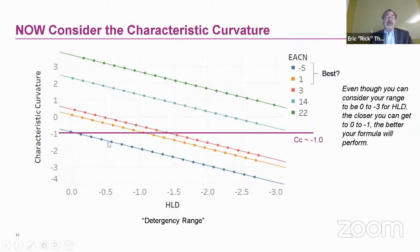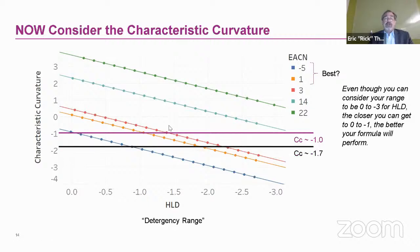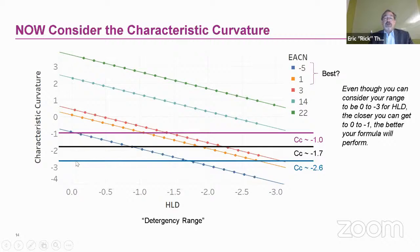Suppose we're looking at an EACN range from 14 to minus 5. We can use a characteristic curvature of negative 1 and potentially address that range within the HLD zone of 0 to minus 3 to get reasonably good results. The more you move toward HLD of 0, the better the results. If we lower the characteristic curvature further, we move into a more hydrophobic range of soil. The goal is to select a surfactant that bridges the most realistic range of EACN values you'll encounter.